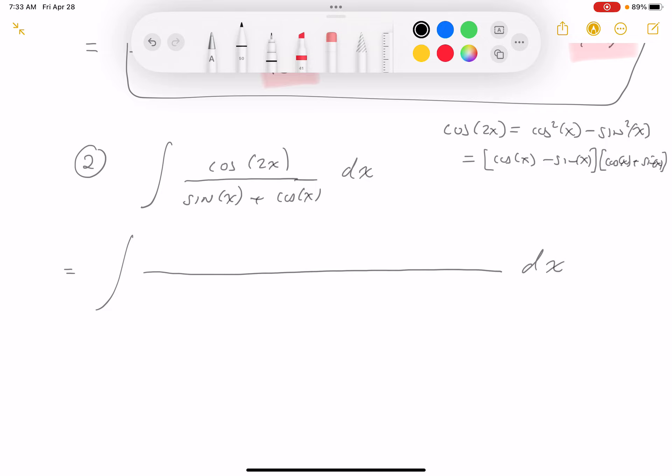The top actually factors into cosine x minus sine x times cosine x plus sine x. And the bottom, I'm going to put a factor symbol on it, sine x plus cosine x.